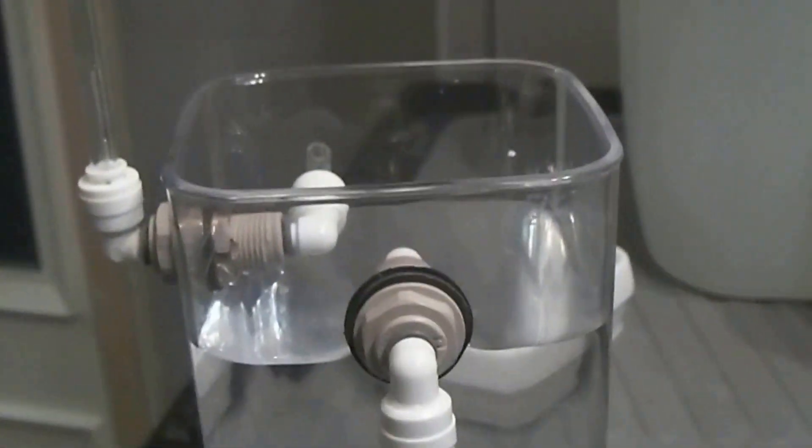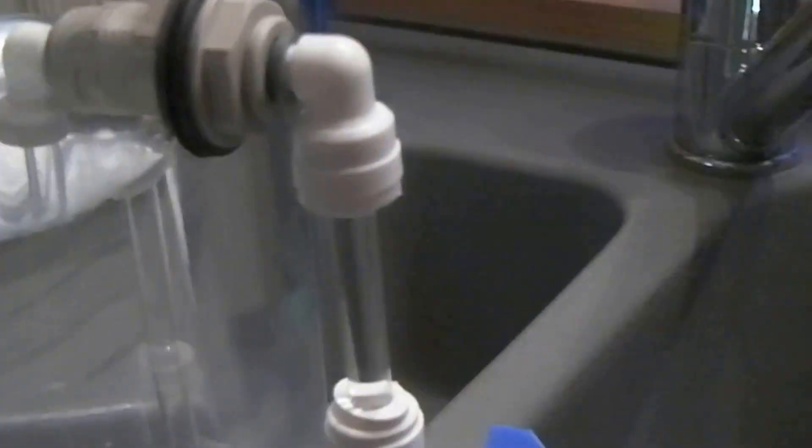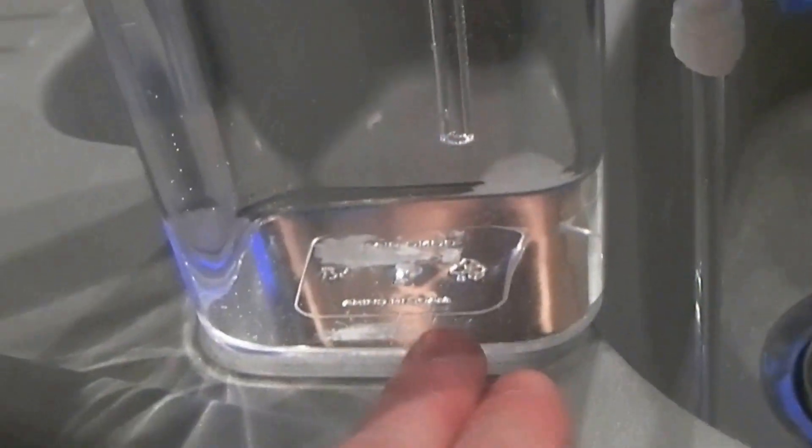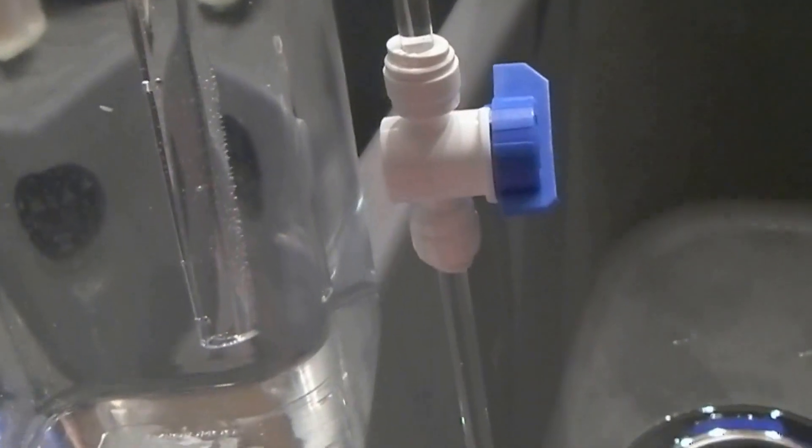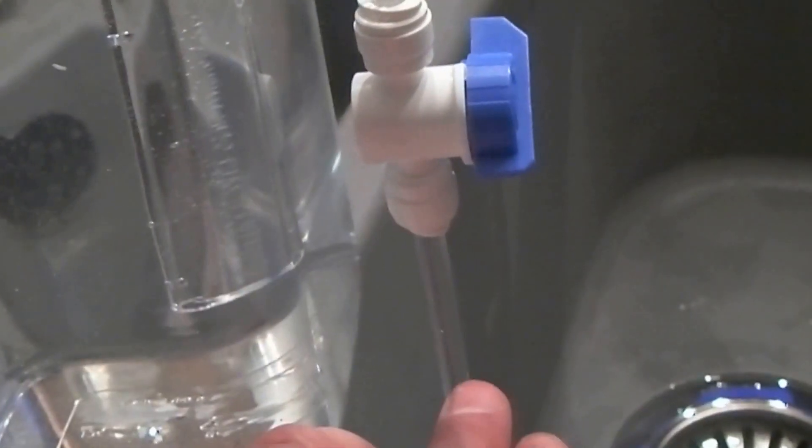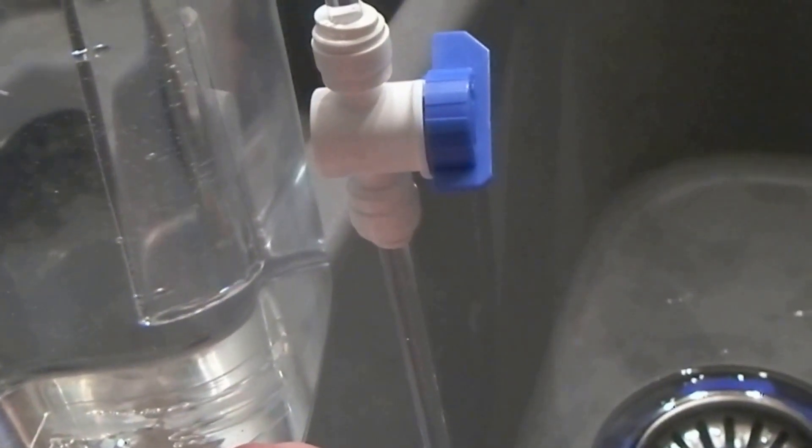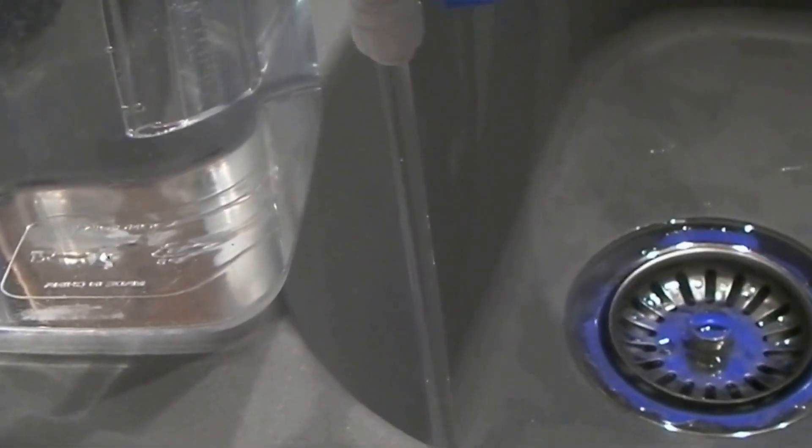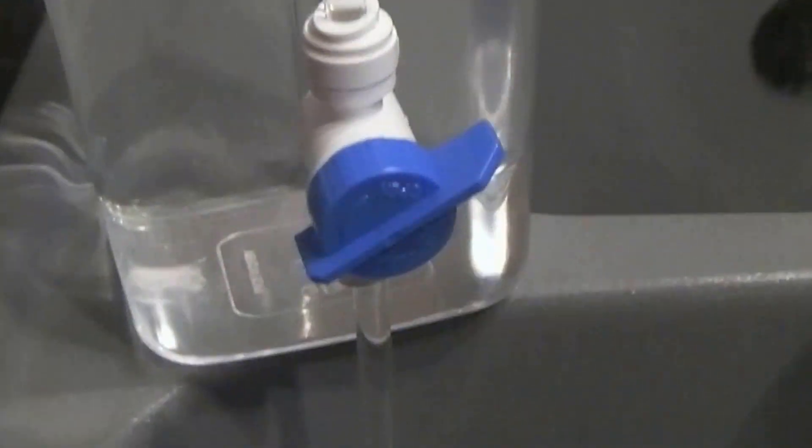I'm going to sit this so it is just over part of the fan cowling, and I will drill a hole through the fan cowling and straight through the perspex of the lid. Then this tube will just go straight in to just above the tank water and it can just drip in from there.